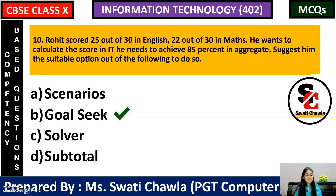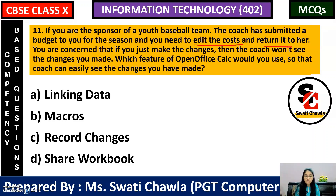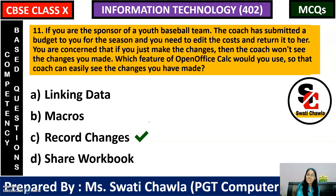Next: If you are the sponsor of a youth baseball team and the coach has submitted a budget to you for the season, and you need to edit it and return it — but you want the coach to be able to see the changes you made — which feature of OpenOffice Calc would you use? If you want all changes you make to be visible, you have to turn on the option of record changes. So the correct answer is option C, that is record changes.